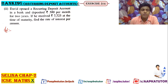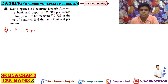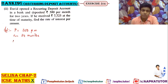David opened a recurring deposit account and deposits Rs. 300 per month. So you have P = 300 per month. For 2 years, n = 2 years, that means 12 × 2 = 24 months. He received Rs. 7,725 at the time of maturity. So the maturity value is Rs. 7,725. Find the rate of interest.